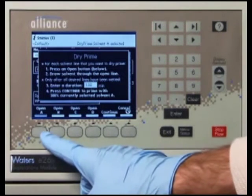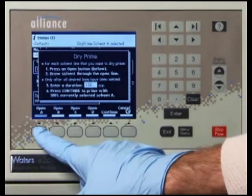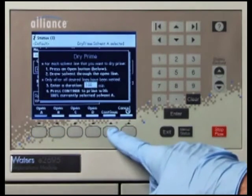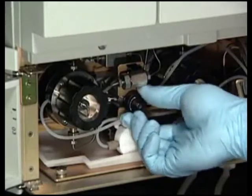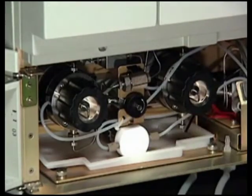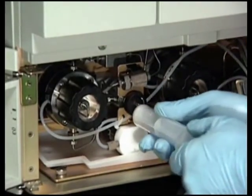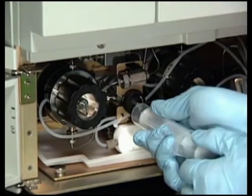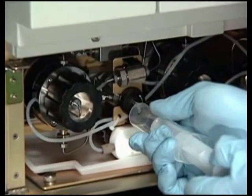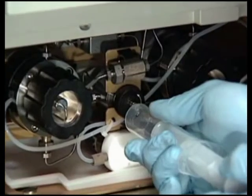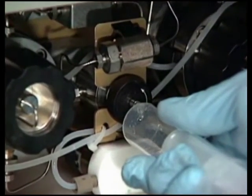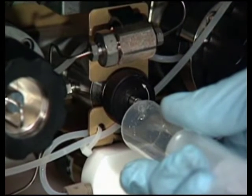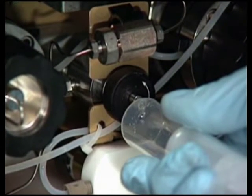Press the screen key corresponding to the solvent line you want to prime, then press Continue. Next, open the vent valve and insert the priming syringe. Withdraw the syringe plunger to pull solvent through the tubing. You may need to exert force to pull the air and solvent through the system. Continue until you pull all the air through the solvent line into the syringe.